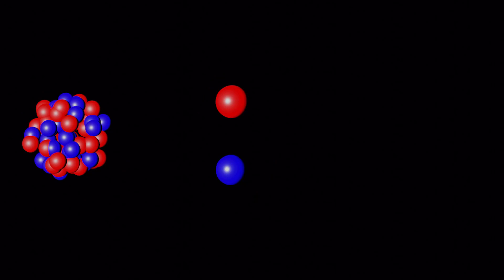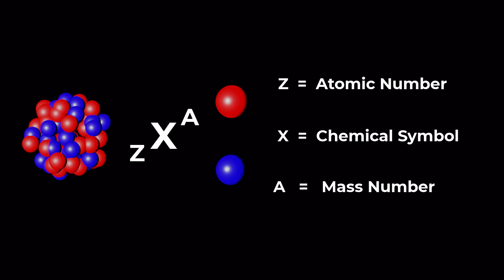In nuclear physics, a nucleus is represented by ZXA, where Z is the atomic number, X is the chemical symbol of the element to which a nucleus belongs, and A is the mass number.